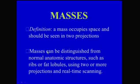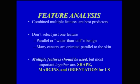A mass is defined as something that occupies space and should be seen in two projections. Masses can be distinguished from normal structures such as ribs or fat lobules using two or more projections and real-time scanning. Multiple features combined are the best predictors of whether a mass is benign or malignant. The most important features for ultrasound are shape, margins, and orientation.